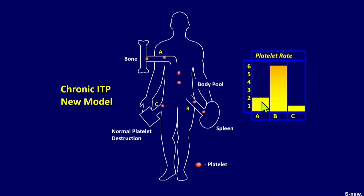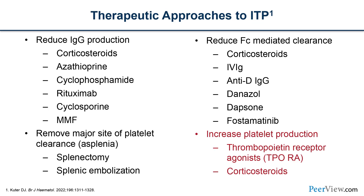This leads to the major ways we treat ITP: stimulate platelet production or decrease platelet destruction. Therapies that increase platelet production include thrombopoietin receptor agonists, and corticosteroids also increase platelet production as a major mechanism. To reduce platelet destruction, we can reduce IgG via rituximab, block FC receptors on macrophages with fostamatinib, dapsone, or danazol, or remove the site of platelet clearance via splenectomy or splenic embolization.